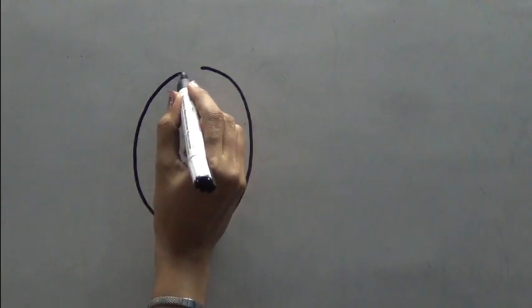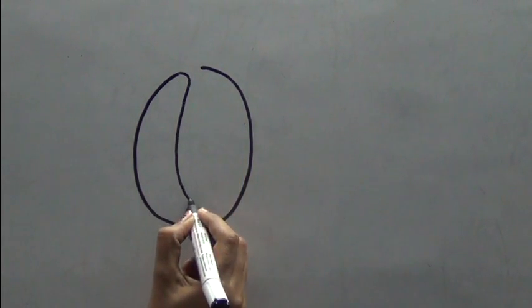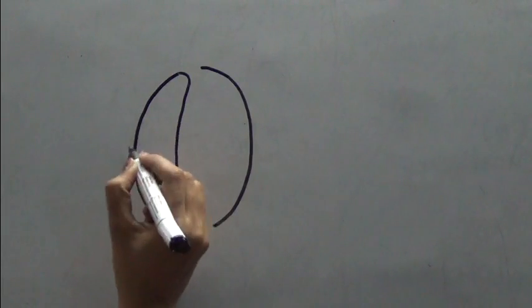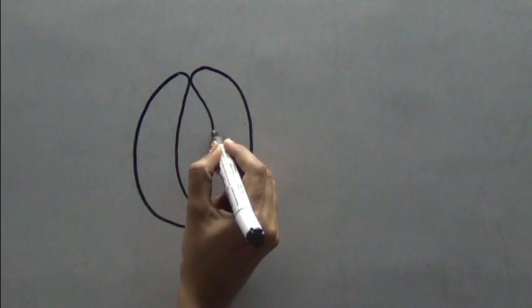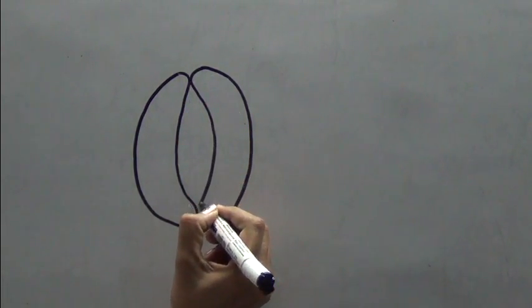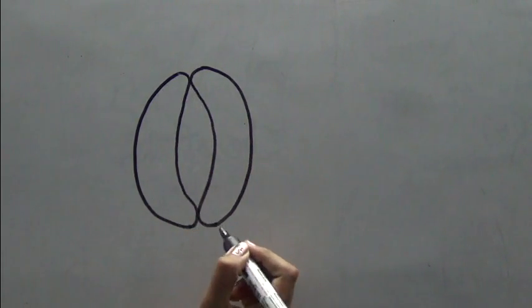Now convert the first one into a bean shaped structure. Just see, I have almost maintained this distance to be parallel. Convert the other one also into a C. But please note that you will touch this C at two points with the previous guard cell.